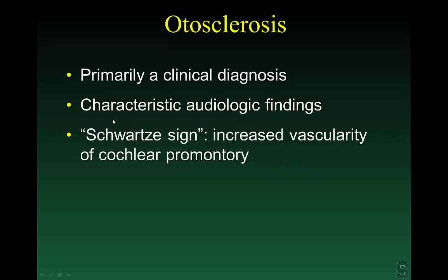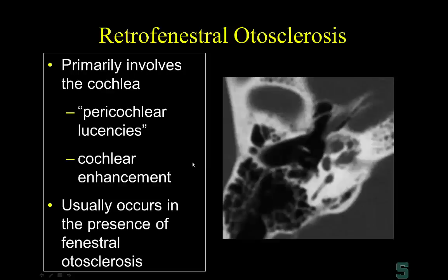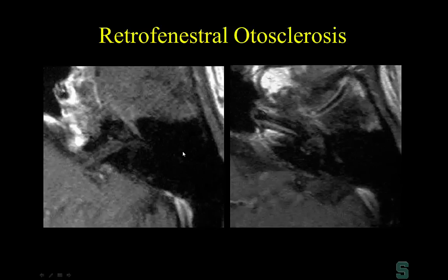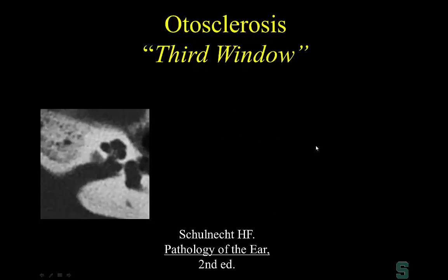The Schwartz sign is a classic clinical finding associated with otosclerosis, likely due to increased vascularity from retrofenestral involvement of the cochlea. You can perform MRI for this — on MRI you look for increased enhancement of the cochlea after gadolinium. I always check for cochlear enhancement in patients with unexplained hearing loss, though my sensitivity for otosclerosis on MRI is less than what's reported in the European literature.